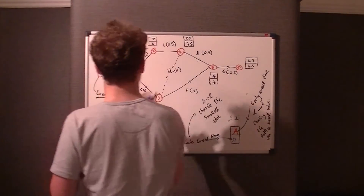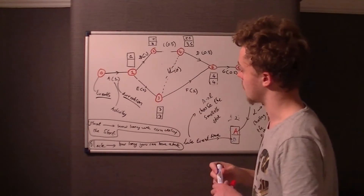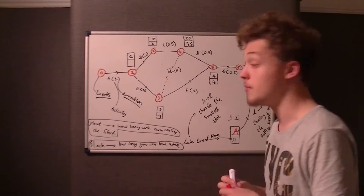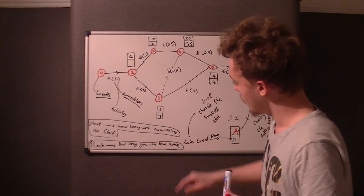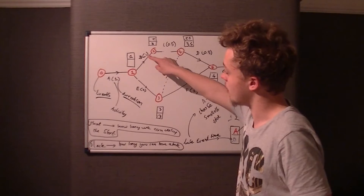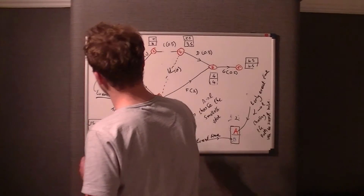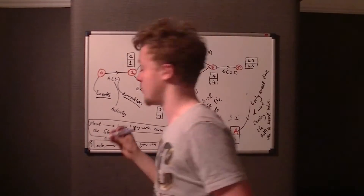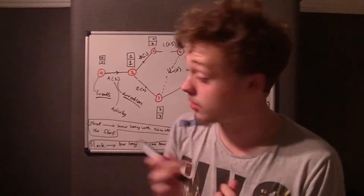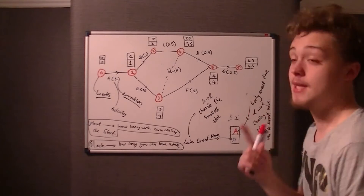Now at nodes two and three we both have Late Event Time of 3. To get to event one: from node three it's 3 minus 2 = 1, from node two it's 3 minus 2 = 1 as well — so the Late Event Time at one is 1. And at zero, both early and late times are zero.